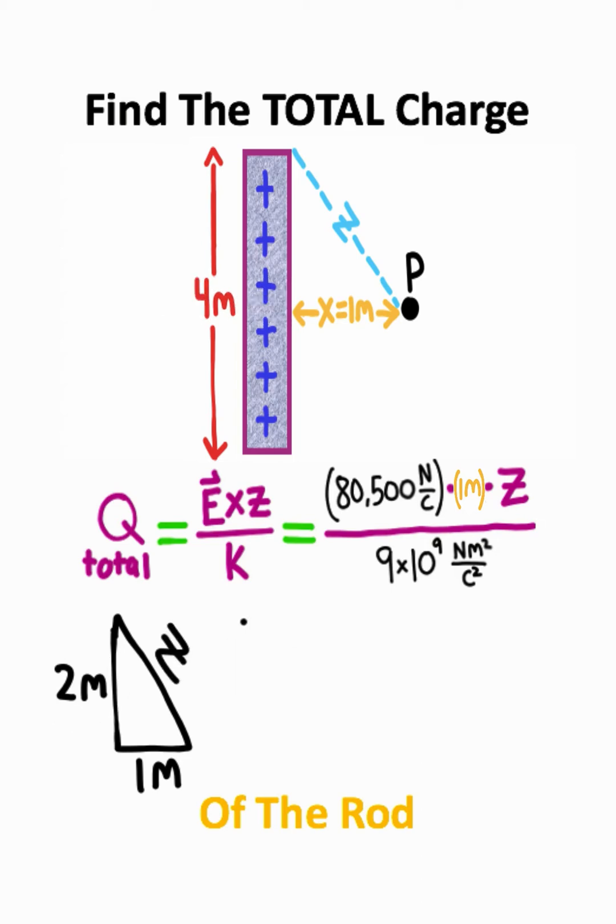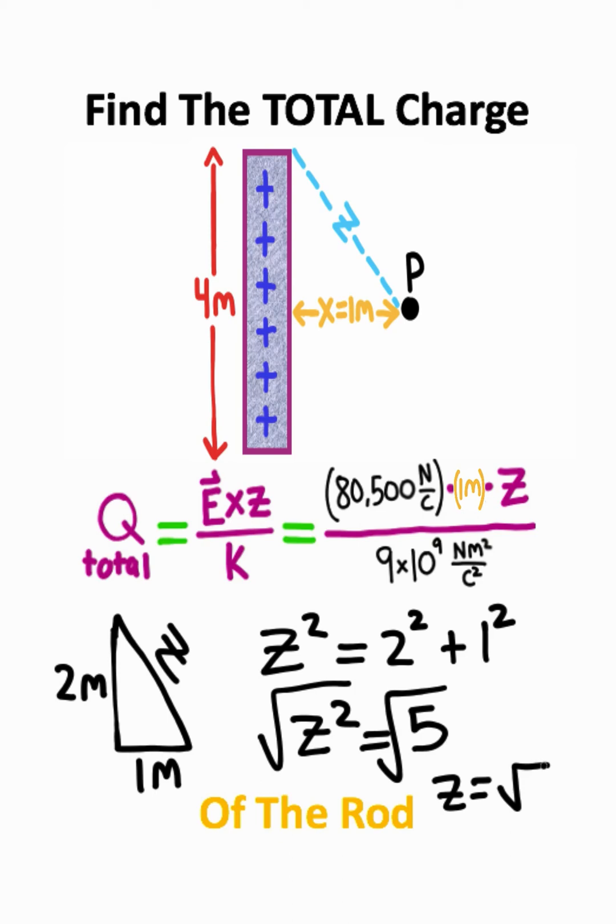To calculate z, I can just use the Pythagorean theorem: x squared plus y squared equals z squared. We're going to set x equal to two, and we're going to set y equal to one. I can add two squared and one squared, which should give you five, and if I square root both sides, I'll get that z is equal to the square root of five.